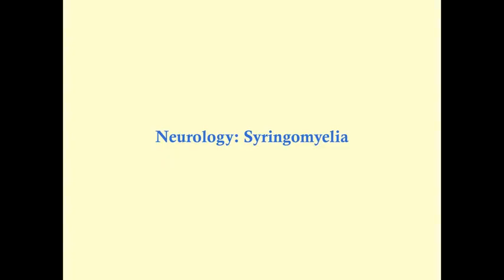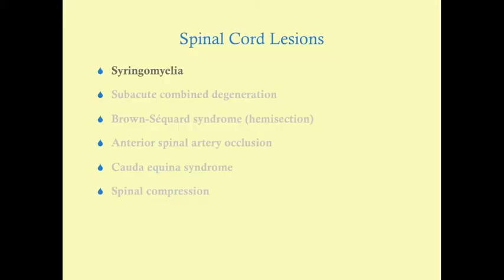This will be a talk on syringomyelia, included in a wider talk of multiple different spinal cord lesions. We're only going to talk about syringomyelia here. This is the first one to start with because it's the easiest to understand, but we'll also talk about subacute combined degeneration, Brown-Séquard, ASA occlusion, cauda equina syndrome, and spinal compression.